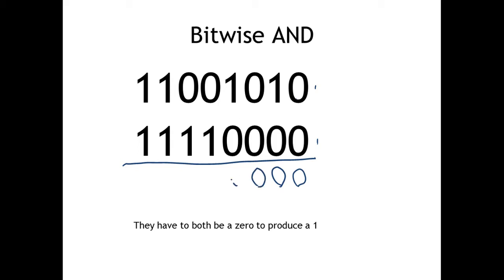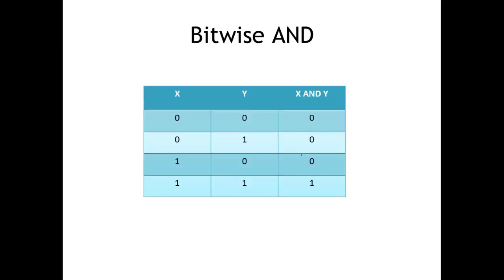Zero-zero results in a zero, one-zero results in a zero. When we get to one-one, both inputs are one, so the output results in a one as well. It's important to notice this is not addition — if it were addition, we'd have carries and a different result. This is a bitwise AND, so we're only looking at whether both bits are one, with no carries involved. The truth table confirms the output is one only when both inputs are one.